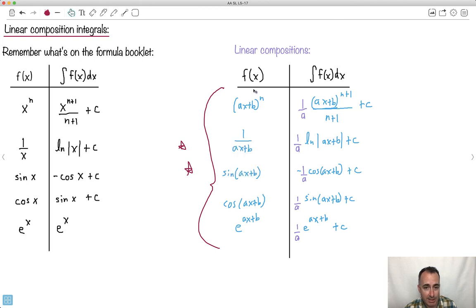But otherwise, these linear compositions, they look really complicated. Once you get the trick of it, just use what you know from your formula booklet, do the linear composition within it, but just don't forget 1 over A, 1 over A, 1 over A. So what's the pro tip we learn here? Don't forget about the 1 over A. That's the important part for all of these ones here. There you go.